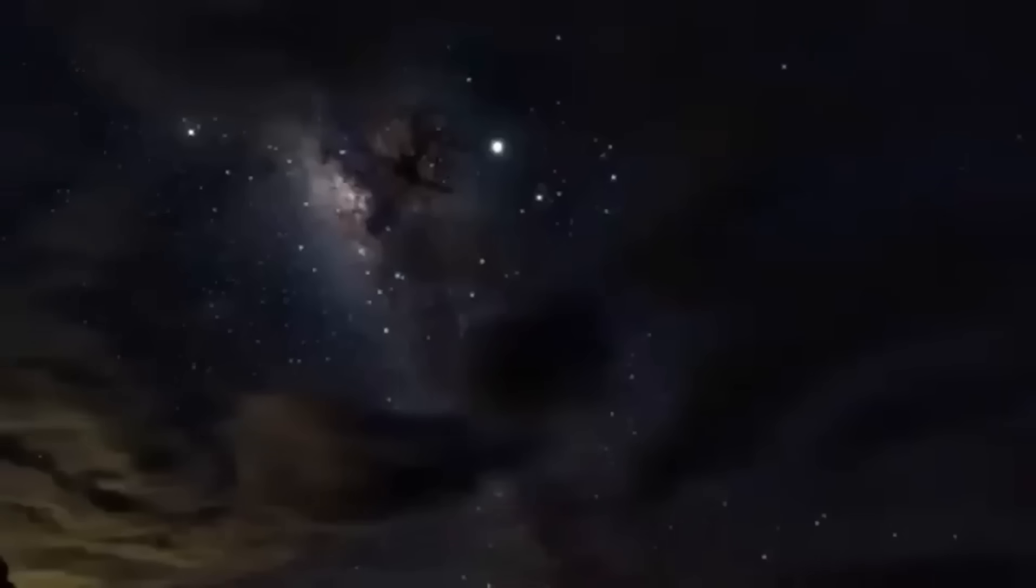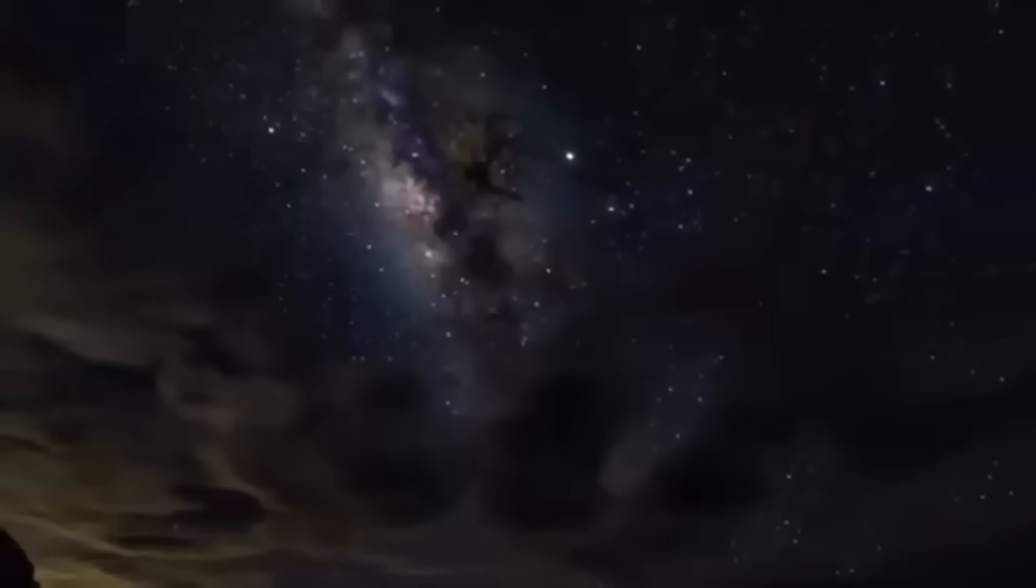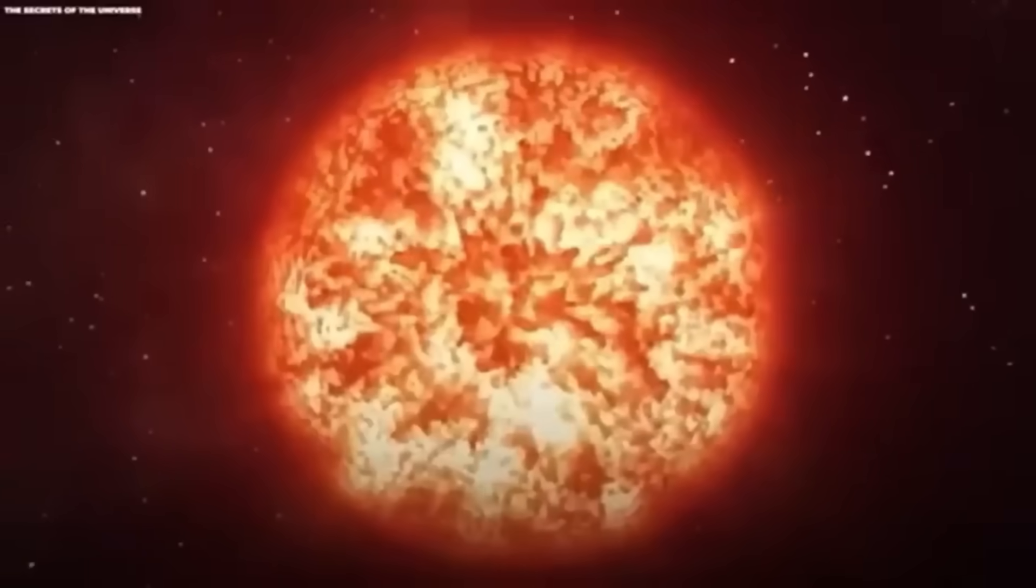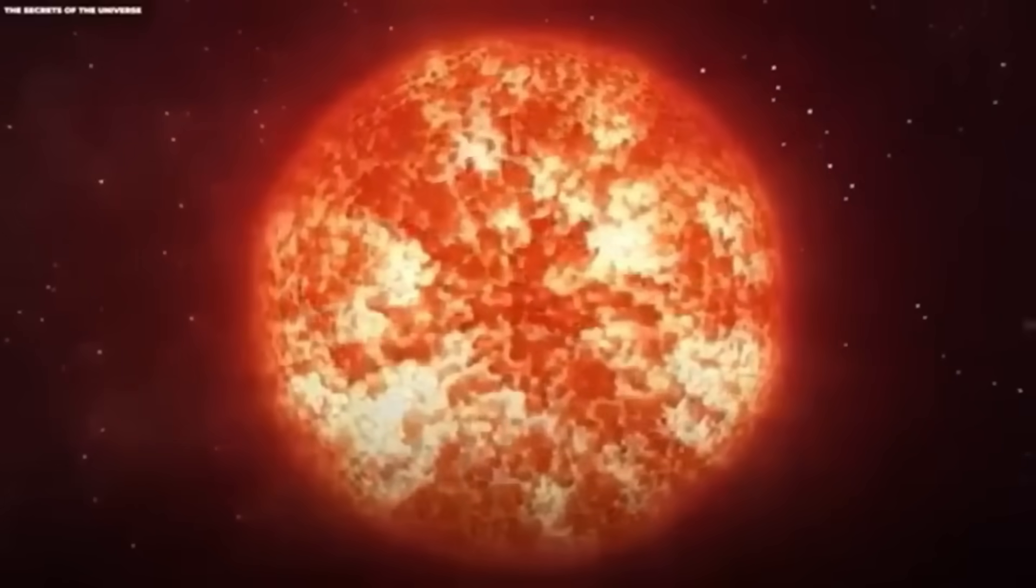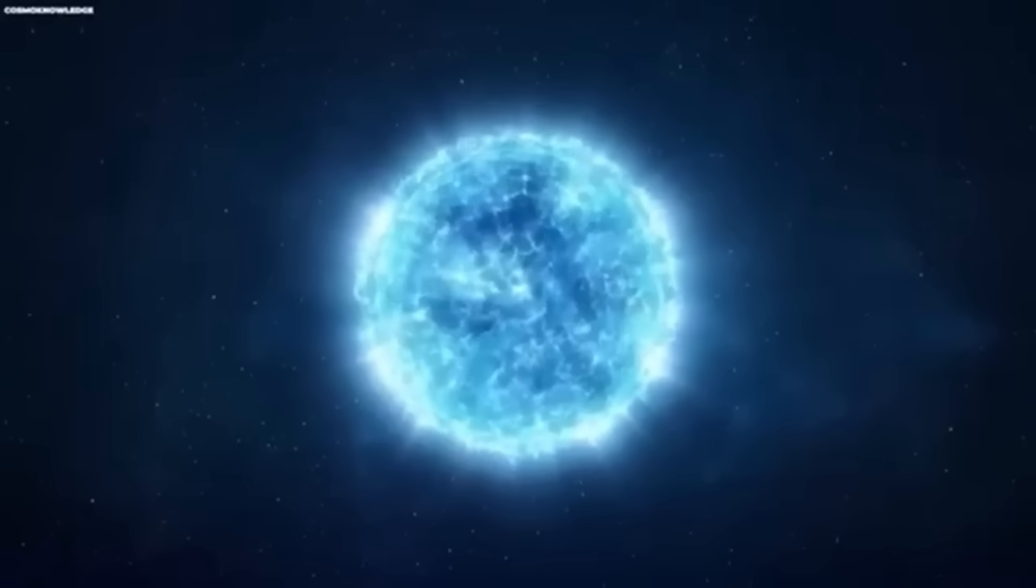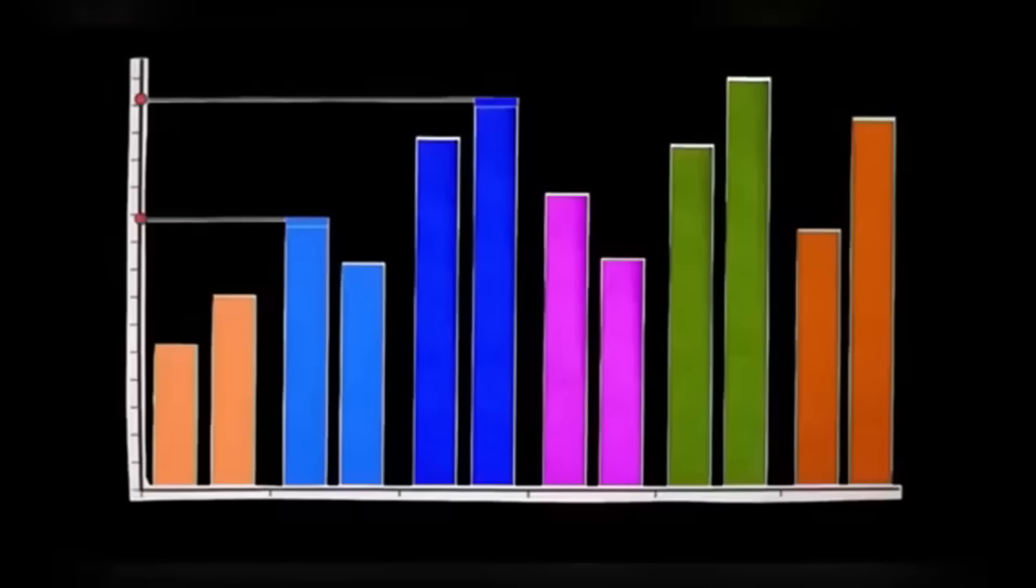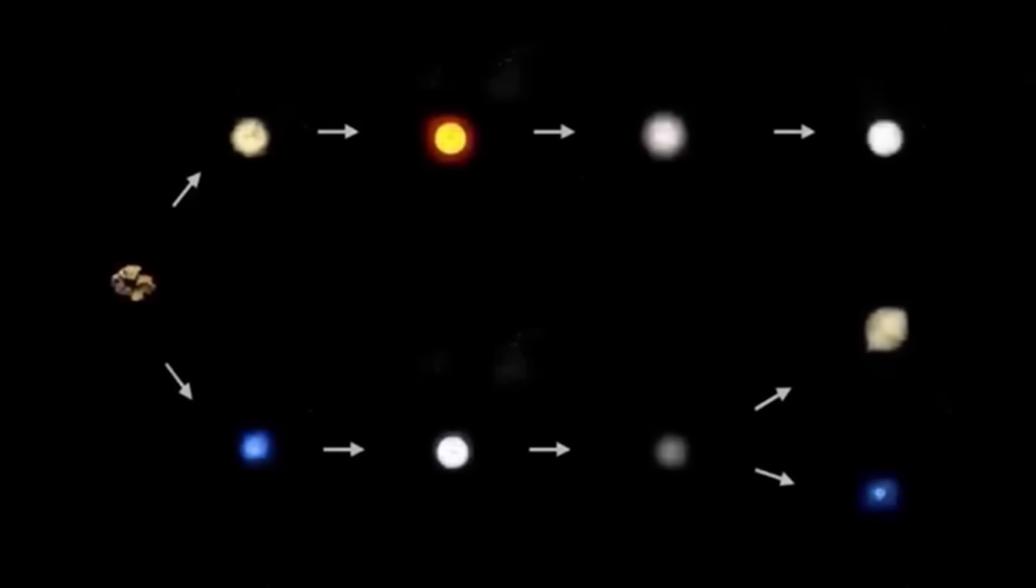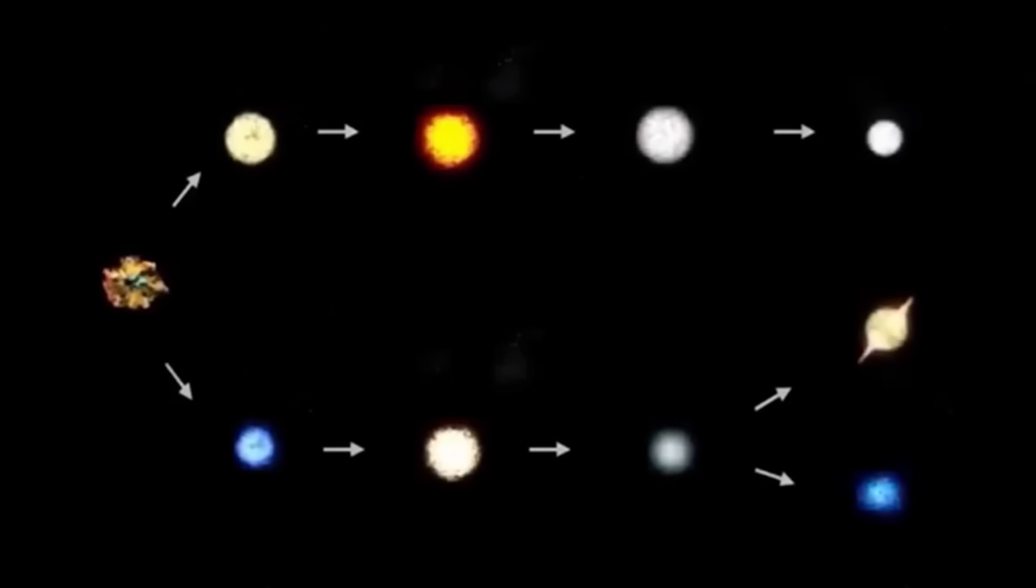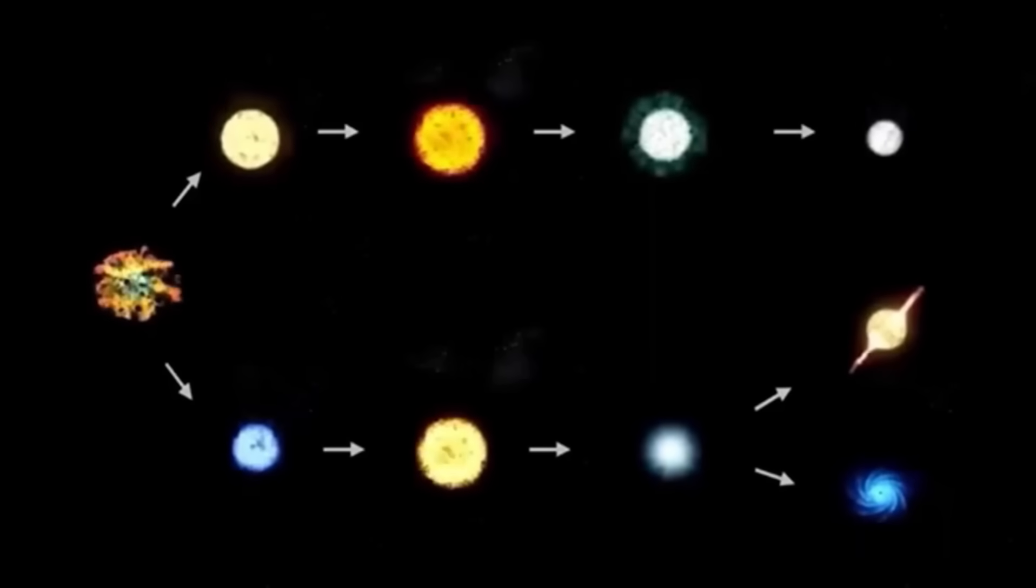Interestingly, historical records have noted that Betelgeuse's color has changed over time. Ancient Roman and Chinese texts suggest that about 2,000 years ago, Betelgeuse appeared yellow. By the 9th century, Arabic astronomers observed its reddish tint, indicating that the star has undergone significant changes over millennia. This color shift is not just a curious historical detail. It offers important insight into the star's evolution and the dynamic processes at play.